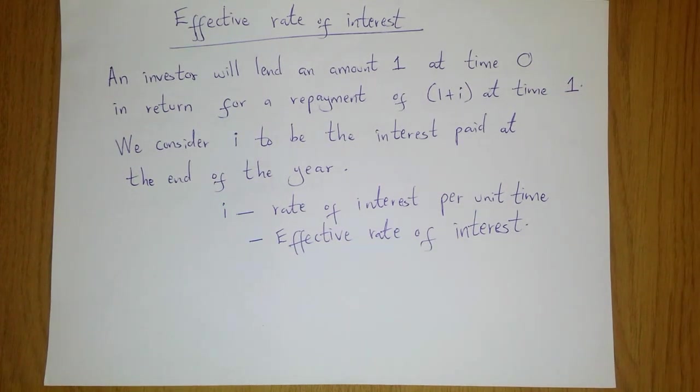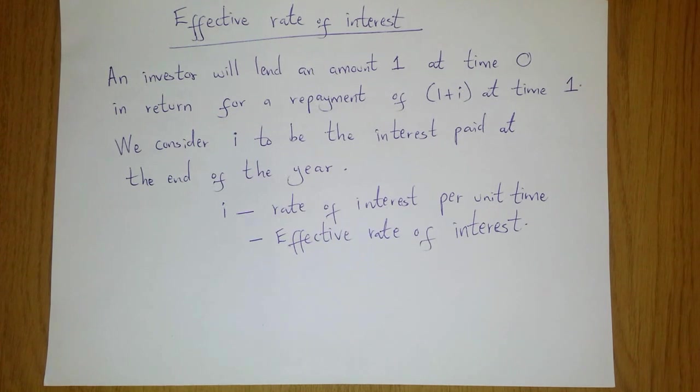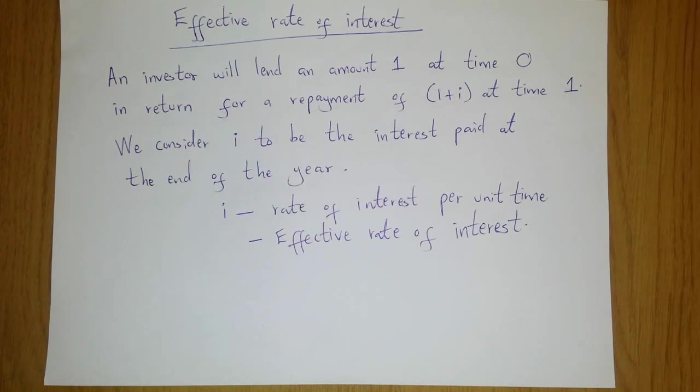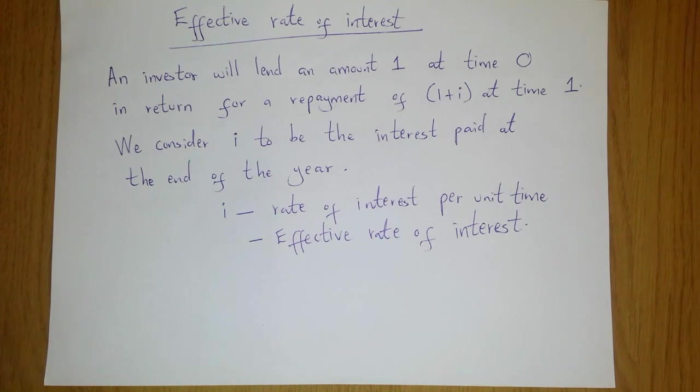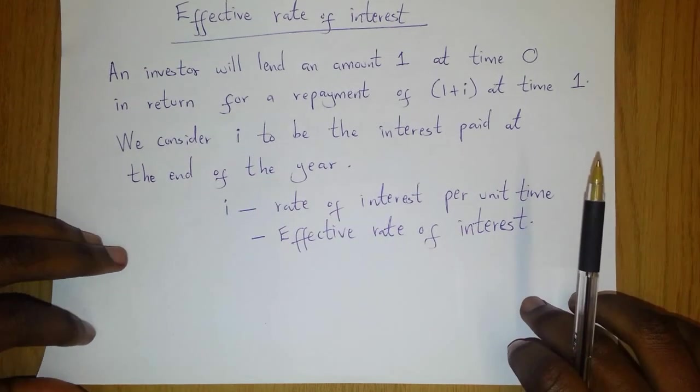So to help you understand effective rates of interest: an investor would lend an amount 1 at time 0 in return for a payment of 1 plus i at time 1. We consider i to be the interest paid at the end of the year. So i is our effective rate of interest.